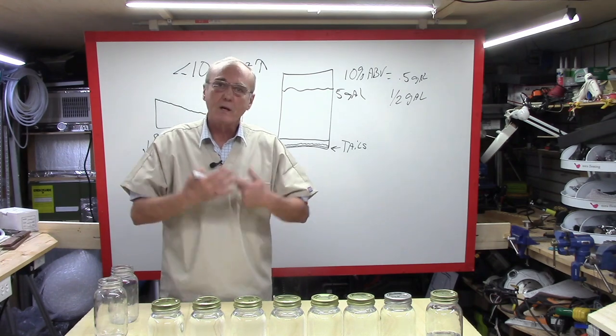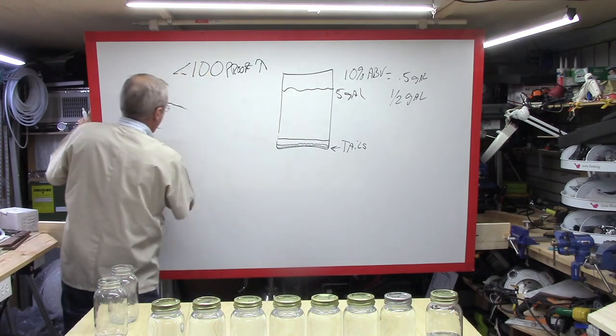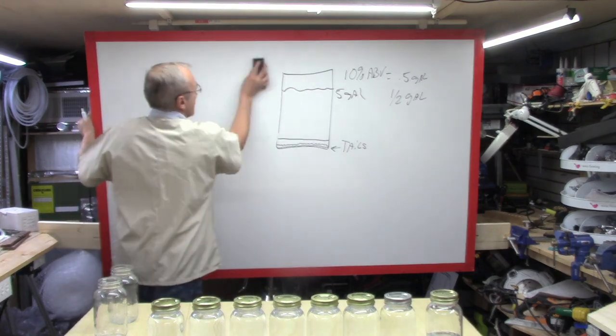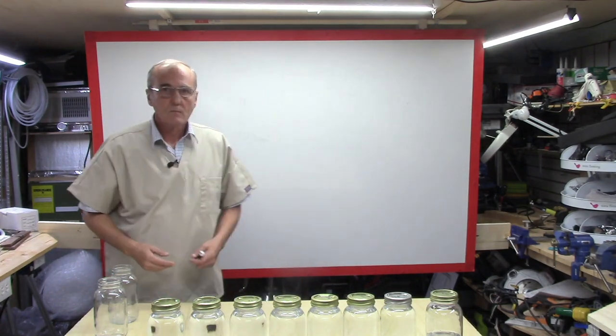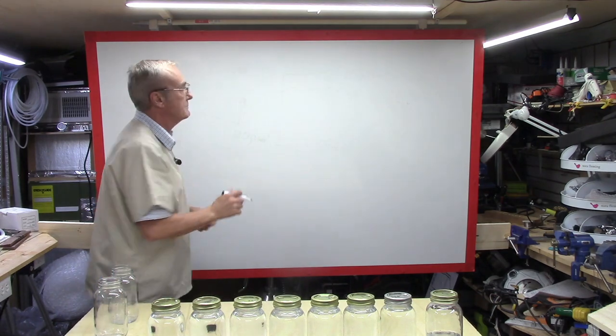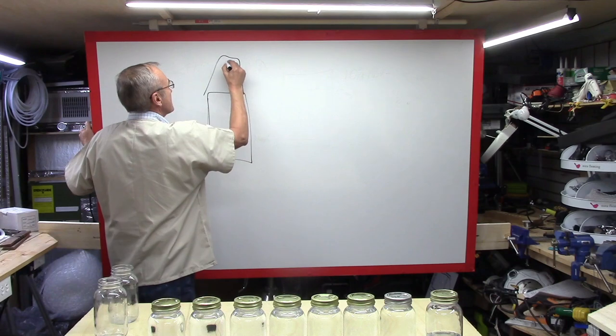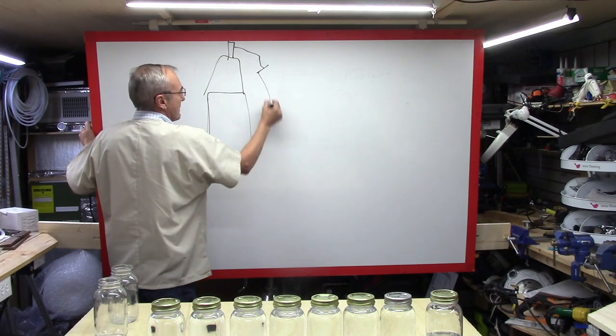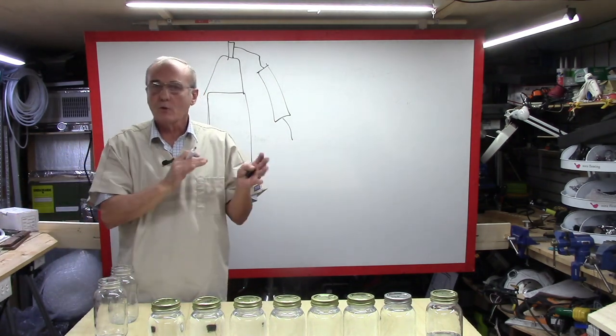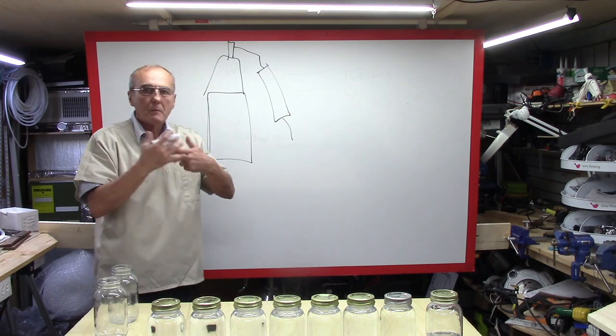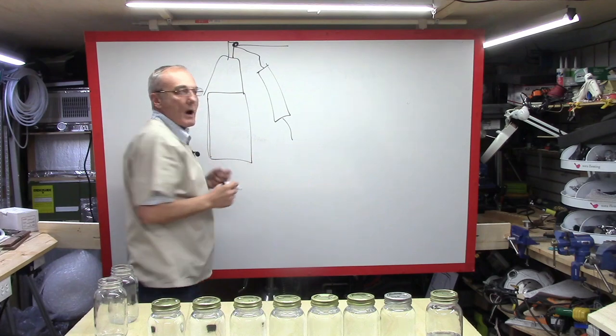Now, how else do we collect tails during a run? You can collect tails during a run by doing something as simple as trying to hurry up. If we're running our still, and I always use this as just an example of a still. It's not actually, it may not look exactly like yours, but that's okay because stills come in many different styles.